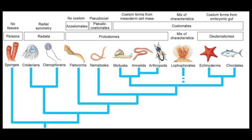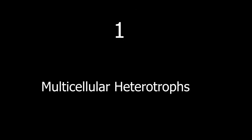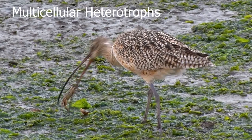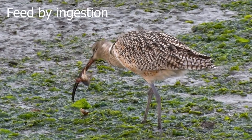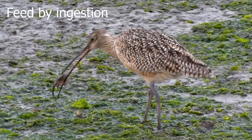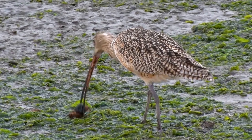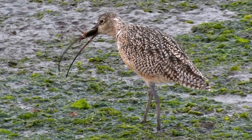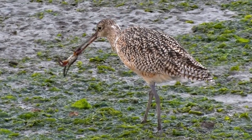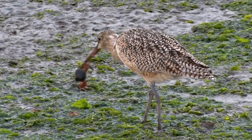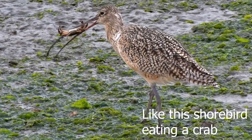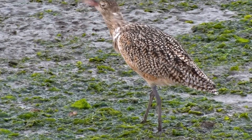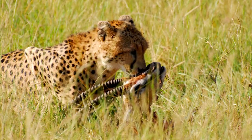One of the first characteristics of animals is that we are multicellular heterotrophs that feed by ingestion. Multicellular simply means we're made up of a lot of different cells. Heterotrophs — 'hetero' means other and 'troph' means feeding — so we're other-feeders, meaning we have to acquire food from our environment. Unlike a plant, we can't get energy from sunlight to combine carbon dioxide and water into sugars.